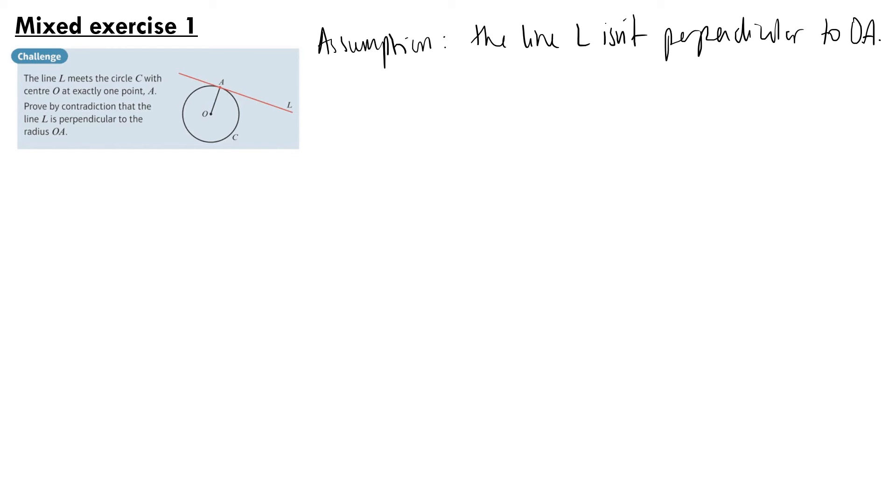So what this means is that if we draw a line through O which is perpendicular to L, it will meet the line L at a different point to A, so like this. We can say this will be a right angle.